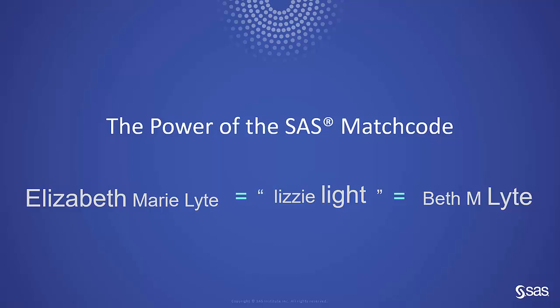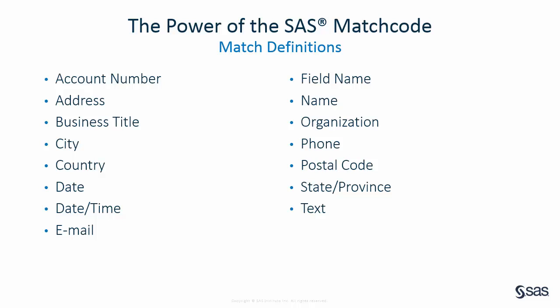I am Mary Catherine Queen with SAS and this is the Technical Insights and Expertise Series. A match definition in the SAS Quality Knowledge Base is used to generate a match code. A match definition utilizes the strengths of probabilistic and deterministic matching when generating match codes. With a single pass through the data, the matching engine will produce an unambiguous match code that represents the identifying variables selected by the user.